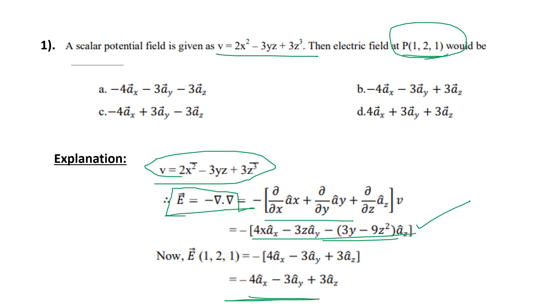Minus 4ax minus 3ay plus 3az. In the options at the end of the problem, you can check. Option B has minus 4ax minus 3ay plus 3az, so option B is the correct answer.